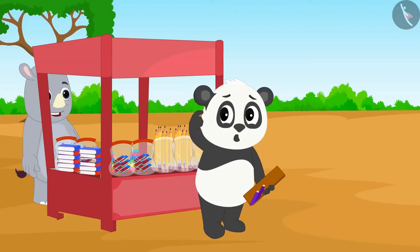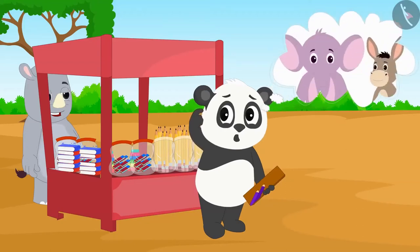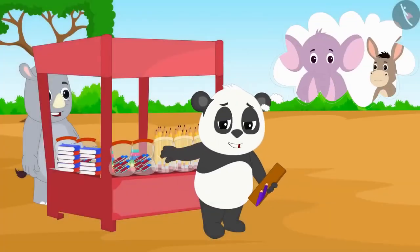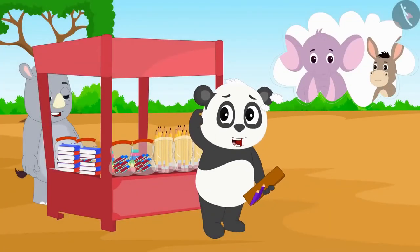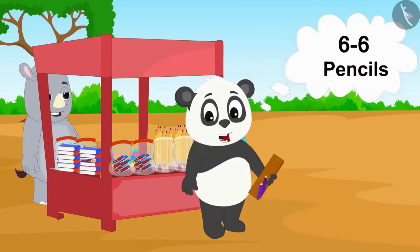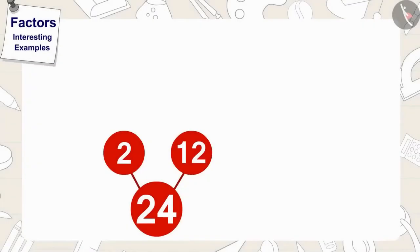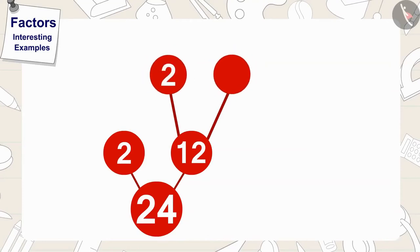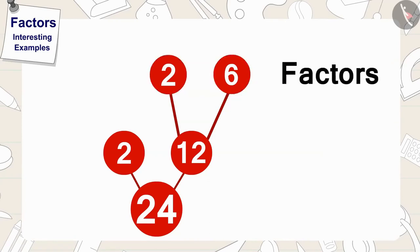Now, Goldu is wondering if his two friends will also be able to divide their twelve pencils to more friends. His friends can divide their twelve pencils equally by giving six pencils to each of their two friends. Thinking this, Golu made two lines from twelve and made two circles at the other end, writing two in one circle and six in the other. As you can see, Golu has written two factors of twelve.